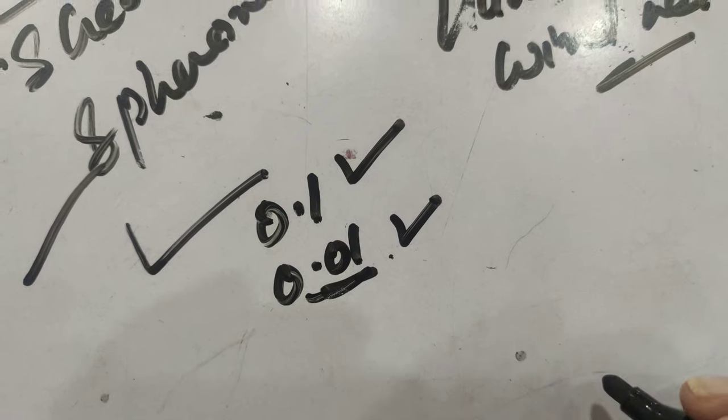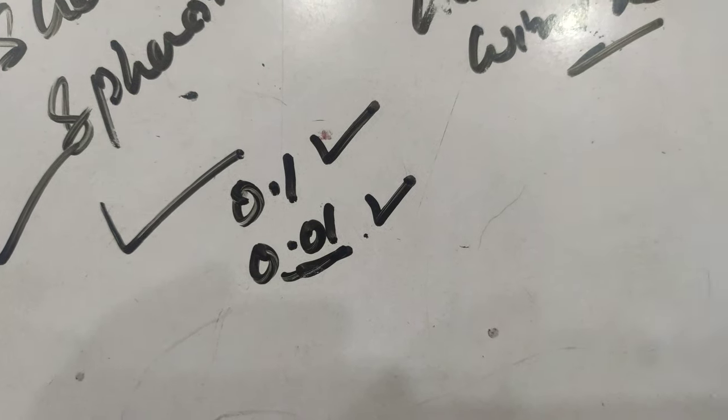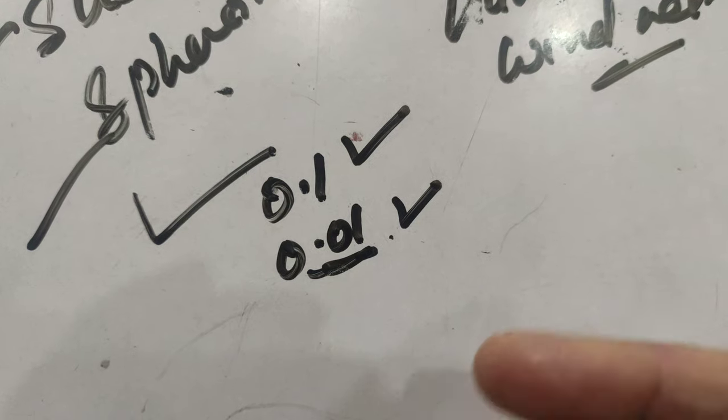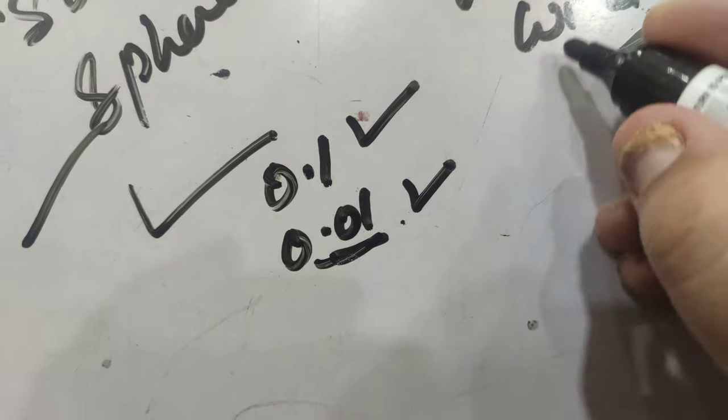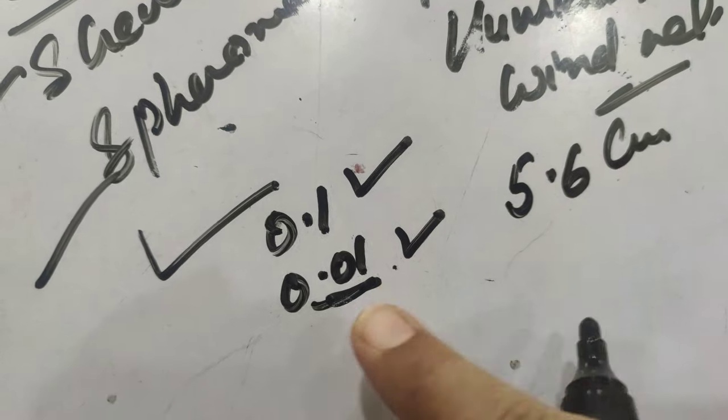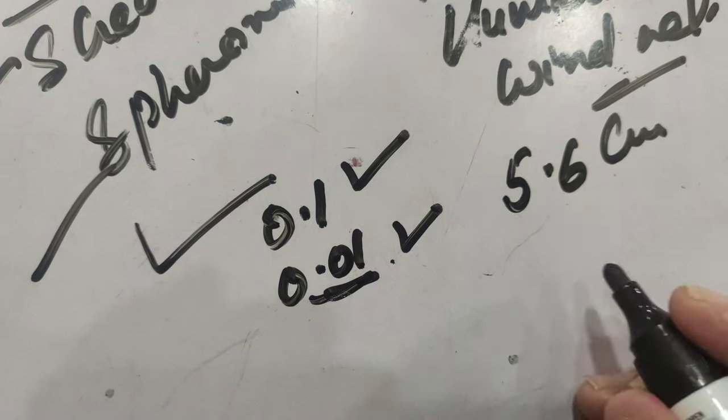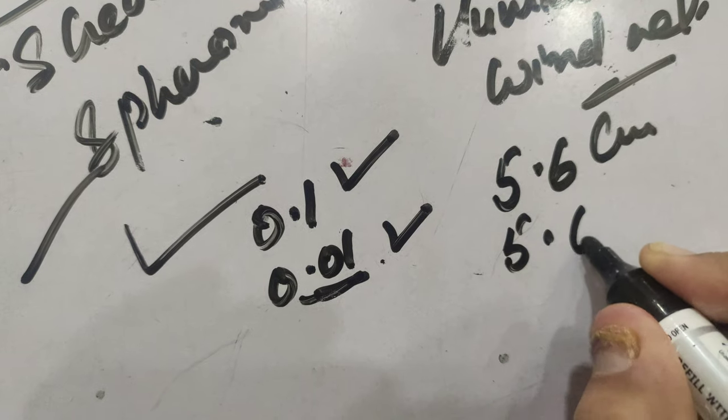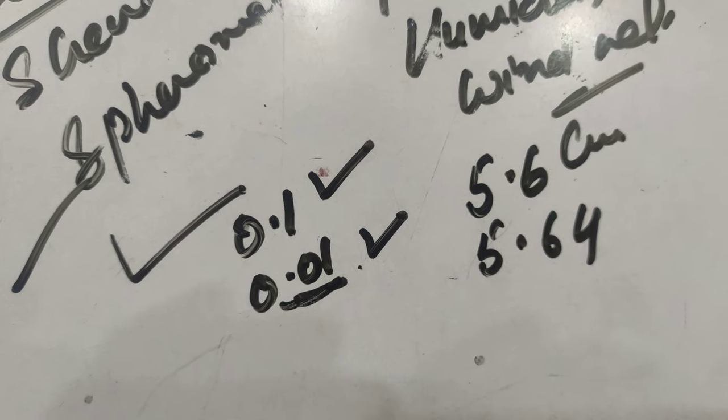For example, if we are measuring the length of anything, suppose we are measuring the length of a geometry box and it comes to be, suppose, 5.6 centimeter. And if we are measuring with the vernier caliper, it will come to be 5.64 centimeter.